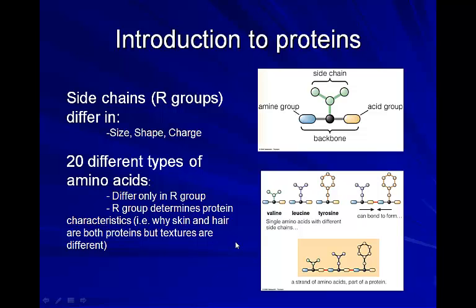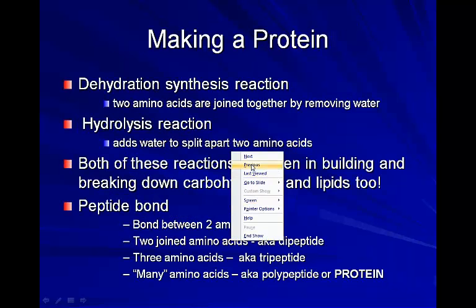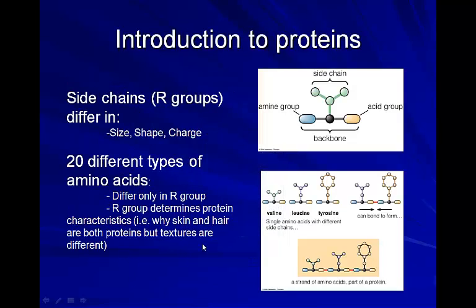Think of skin, hair, and fingernails — they're all made up of proteins, but they have very different textures. Skin is much more elastic, whereas hair is more rigid. Fingernails have a lot of sulfur in them; the proteins have many disulfide interconnecting bonds throughout the protein structure, which gives fingernails their rigidity. Skin, hair, and nails are all protein, but because of different combinations of amino acids, the protein structure looks and functions very differently.